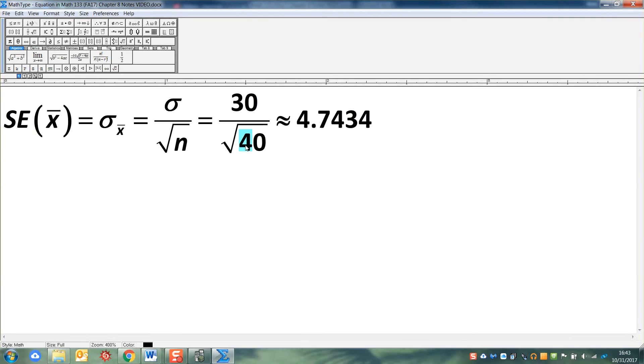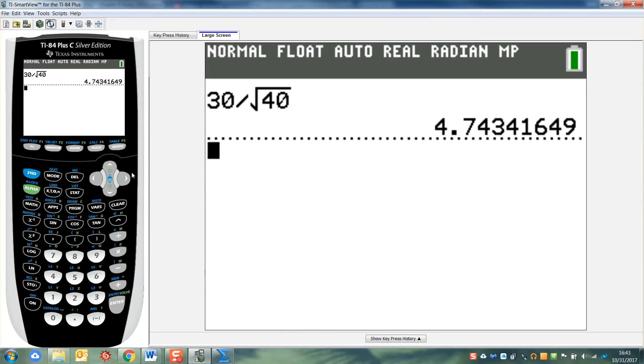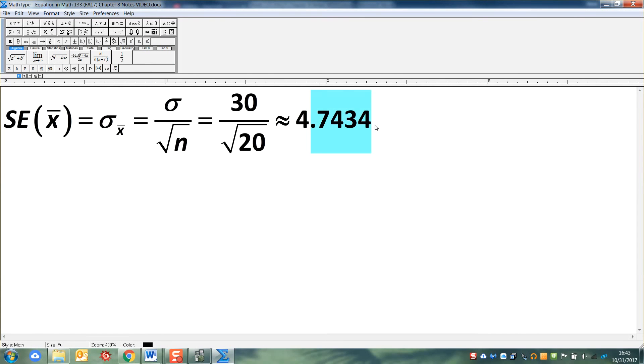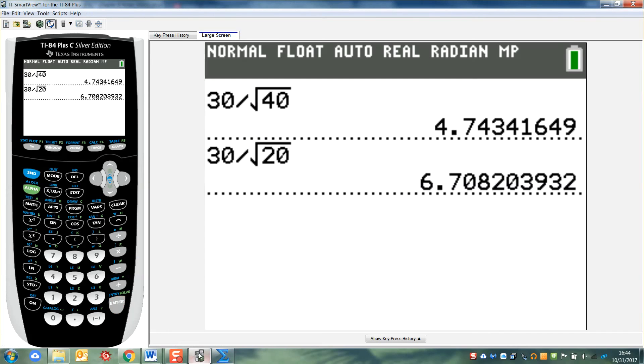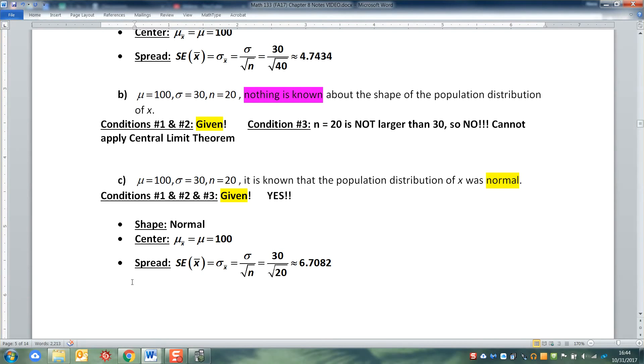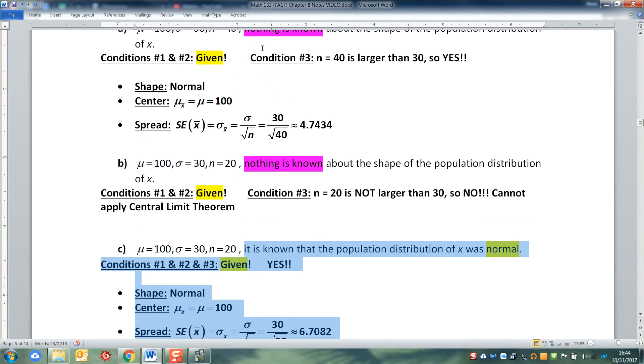But my spread is going to change. Instead of being 30 divided by the square root of 40, it's 30 divided by the square root of 20. So if I grab a calculator and I go up here with my arrows and get here and press enter, that brings the last calculation. I can just use my left arrow to get in there and type a 2 over that 4 and press enter. And I'll have 6.708. So that's what I have. 6.7082. There we go. And there we have it. There's our new spread.